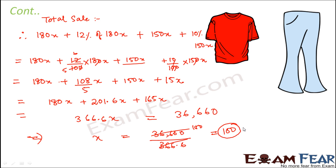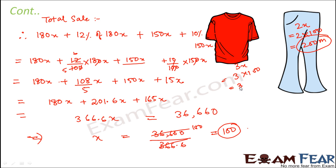The value of x is 100. The trouser material was 2x = 2 × 100 = 200 meters, and the shirt material was 3x = 3 × 100 = 300 meters. Therefore, he purchased 200 meters of trouser material and 300 meters of shirt material.